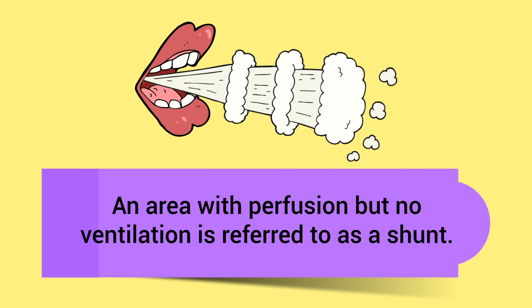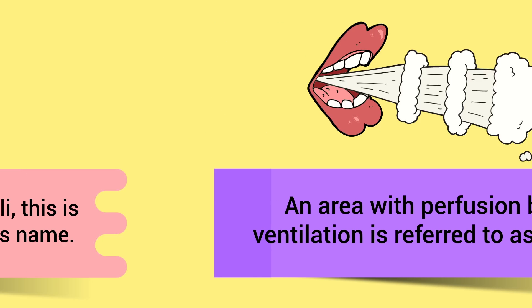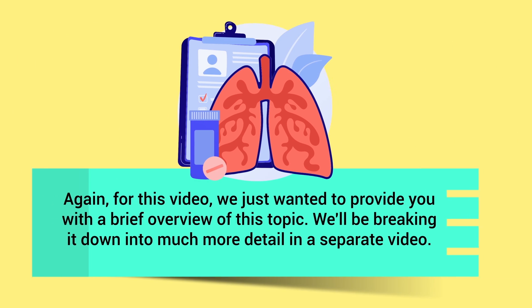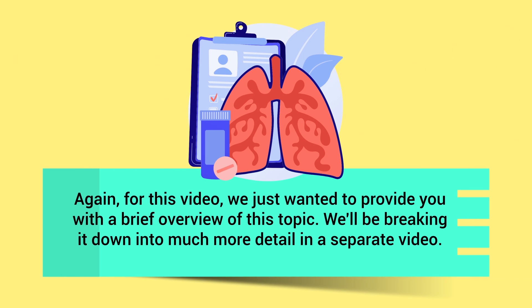So just to recap: an area with perfusion but no ventilation is referred to as a shunt, and since it occurs within the alveoli, this is where an alveolar shunt gets its name. Again, for this video we just wanted to provide a brief overview of this topic — we'll be breaking it down in much more detail in a separate video.